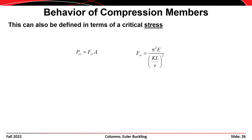These terms can also be defined in terms of stress. We write P_critical as F_critical times A, where F_critical = π²E / (kL/r)², and kL/r is the effective slenderness ratio.